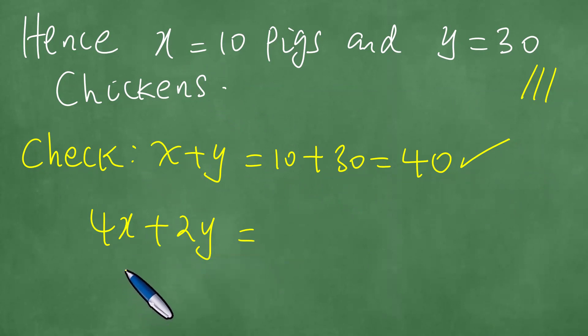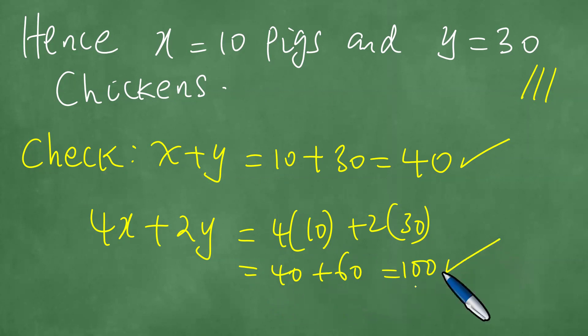We know that 4X plus 2Y, in other words, the number of legs of all the pigs and chickens was counted as 100 legs by Joseph. So we have 4 times 10, 2Y is 2 times 30. This is 40 plus 60, and 40 plus 60 is 100.